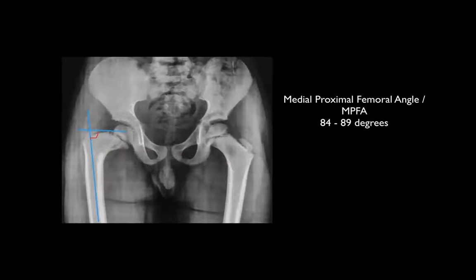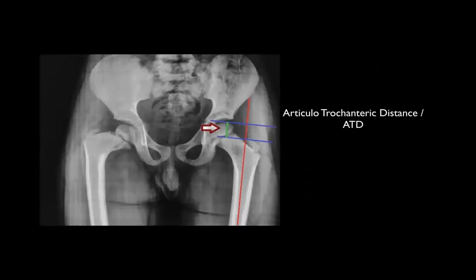The Medial Proximal Femoral Angle (MPFA) is important for understanding the extent of trochanteric overgrowth — whether it is disproportionate to the varus deformity of the neck. The LBFA uses the mechanical axis requiring whole limb views, whereas MPFA using the anatomical axis is more practical. The articulotrochanteric distance measures the vertical offset between the tip of the trochanter and the femoral head center. The trochanter tip should be at the level of the femoral head center; if it is above the center, this produces functional coxa vara due to abductor insufficiency.